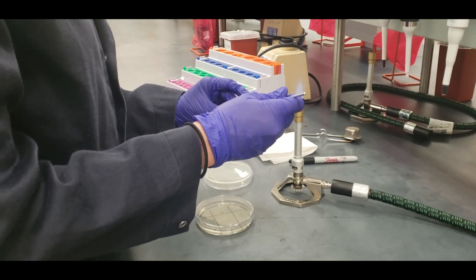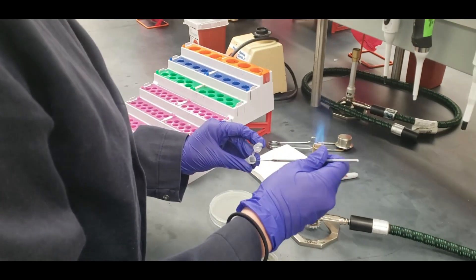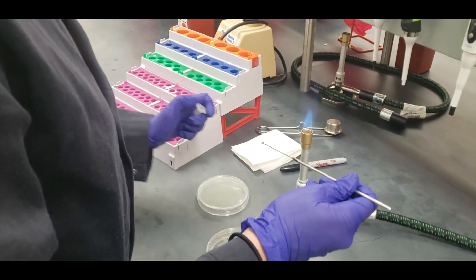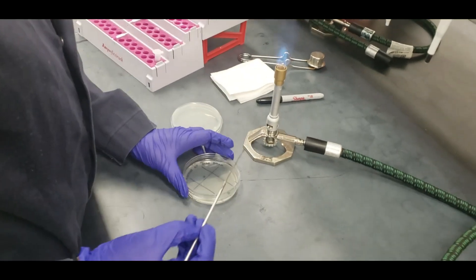You're going to stick your loop in your culture tube and you're going to streak all of quadrant one.